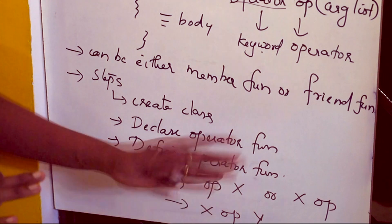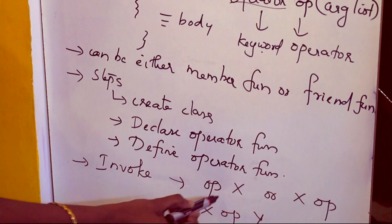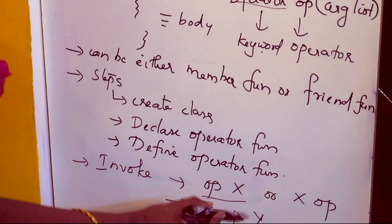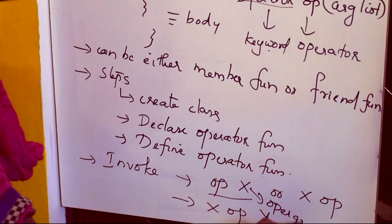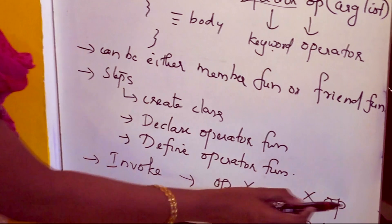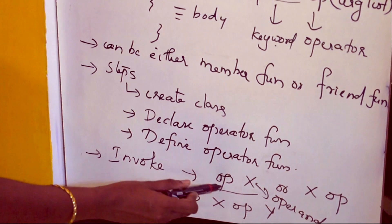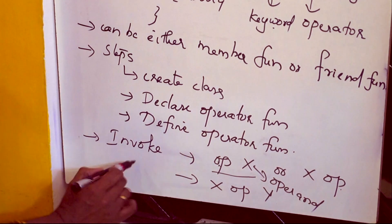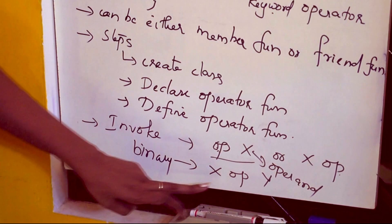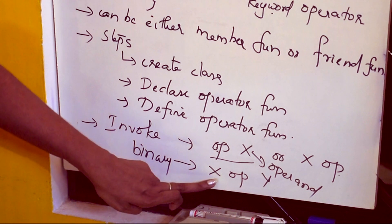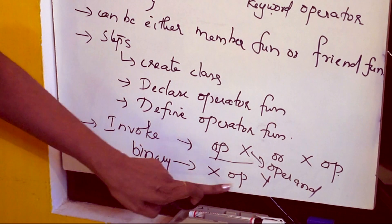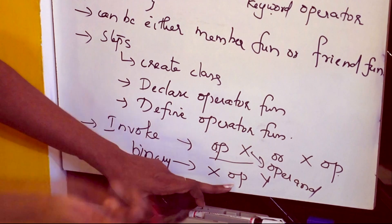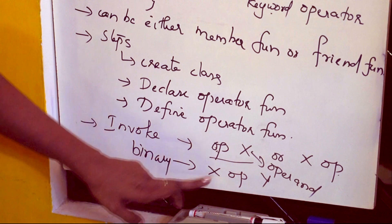Now, how do we invoke the operator function from the main function? If it is a unary operator, we can write op followed by x, where x is the operand — op is a prefix operator — or write x followed by op, where op is a suffix operator. For a binary operator, the general format for invoking the operator function is x op y, where x and y are the two operands and op is the operator. For example, if op is plus, it will be x plus y.